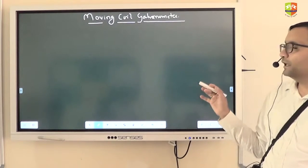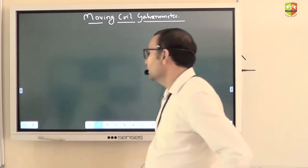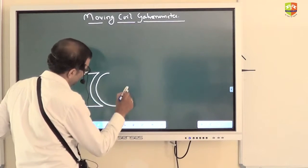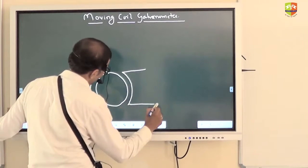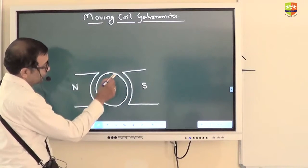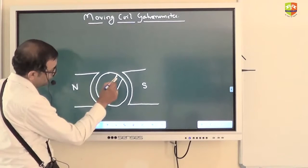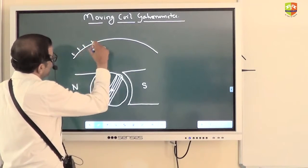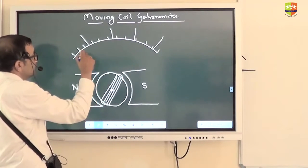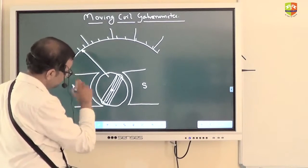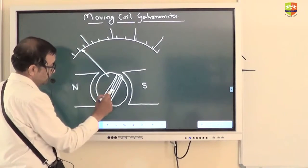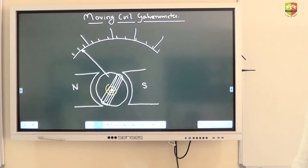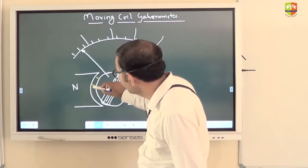Right, so right now we are getting inside the galvanometer and seeing how it is made. So inside galvanometer this is how it looks. The magnets are placed in such a manner that it creates a radial magnetic field.